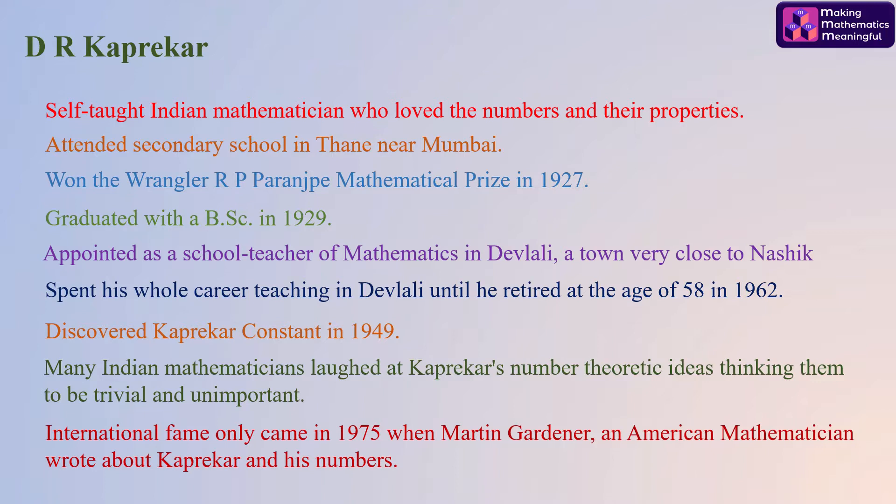But international fame only came in 1975 when Martin Gardner, an American mathematician, wrote about Kaprekar and his numbers.